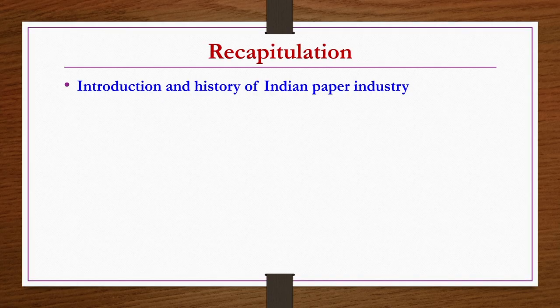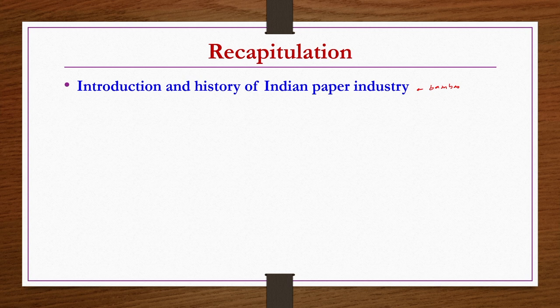We started with the introduction and history of Indian paper industries, and realized that Indian paper industry is the first one to use bamboo as raw material for papermaking, because bamboo has long fibers and the quality of paper produced from bamboo fiber is very good compared to other raw materials. It was realized that bamboo cultivation needed to meet paper demand, which was not possible, so alternative raw materials were investigated. It was found that blending bamboo with other wood or straw raw materials still gives better quality paper.